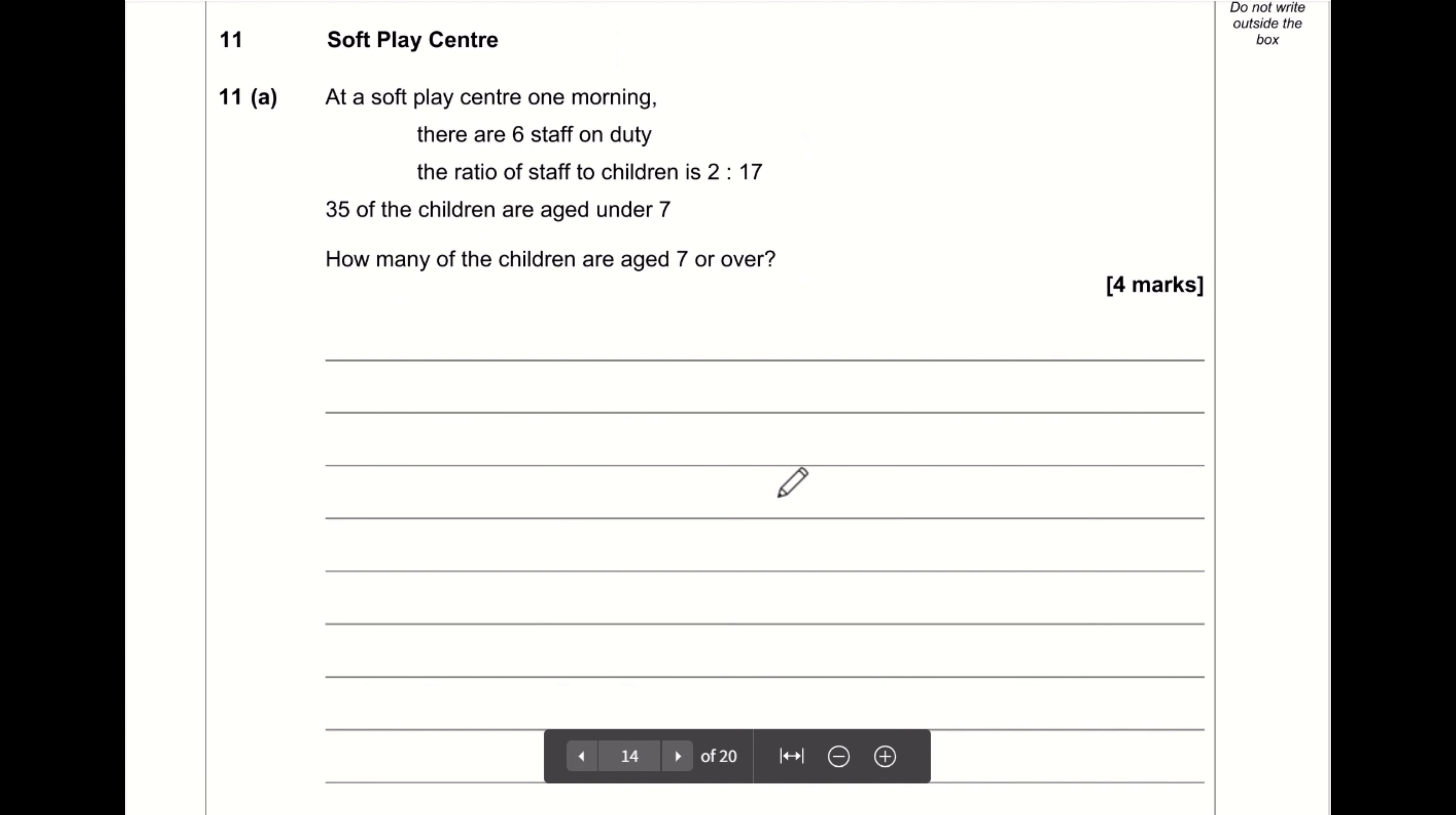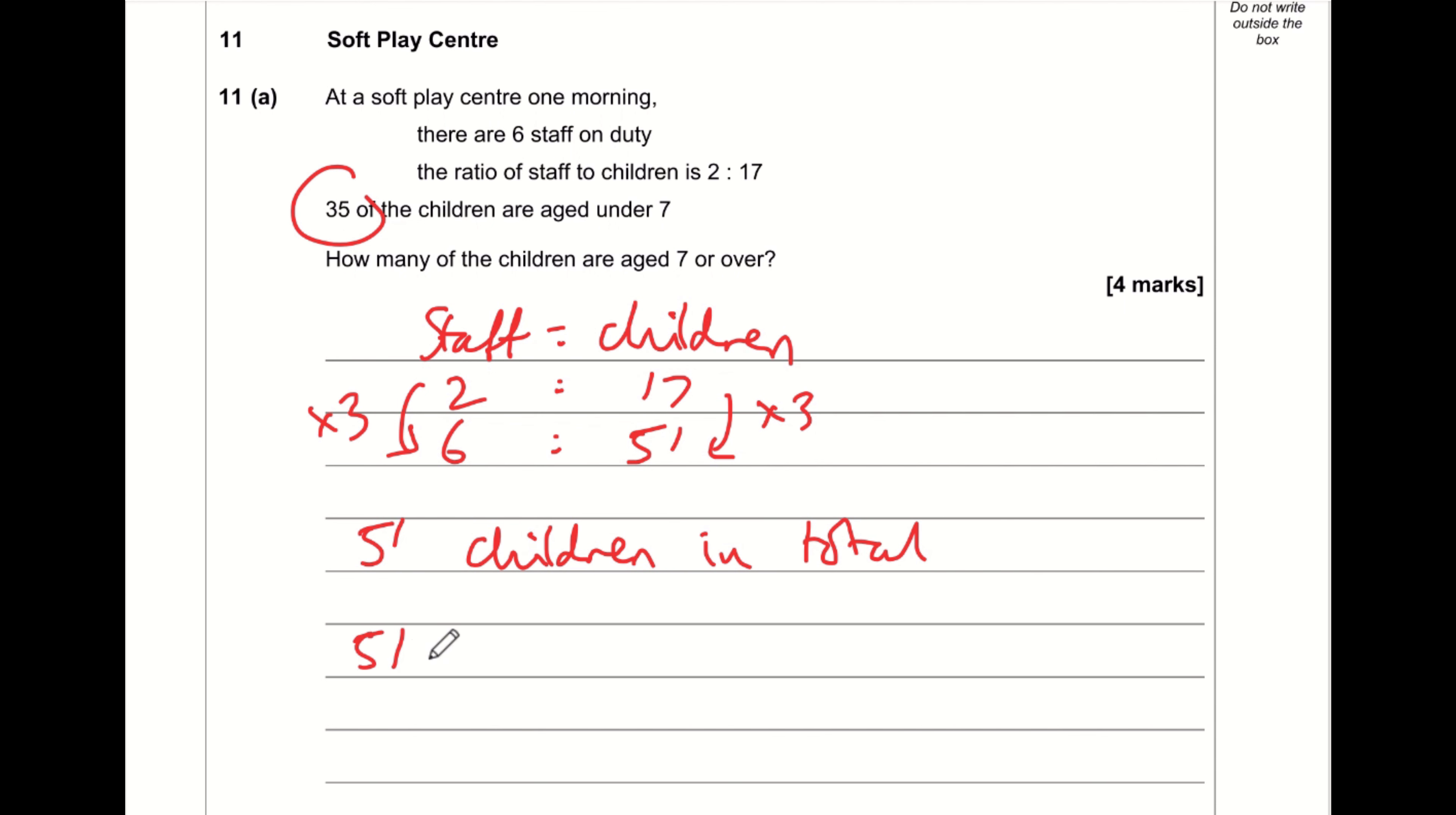Question number 11. We know that the ratio of staff to children is 2 to 17, and we've been told that there are 6 staff on duty. Now that is 3 times more than 2. So therefore for an equivalent ratio we need to multiply 17 by 3, and 17 multiplied by 3 is 51. So we know there are 51 children in total. If 35 are under 7 then the rest must be over 7. So 51 minus 35 is 16. So there must be 16 children aged 7 or over.